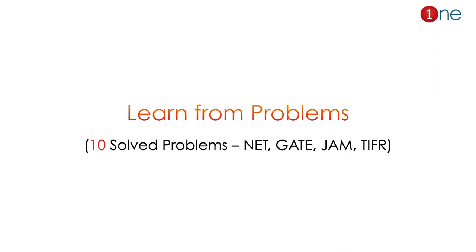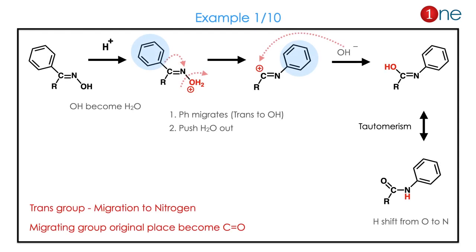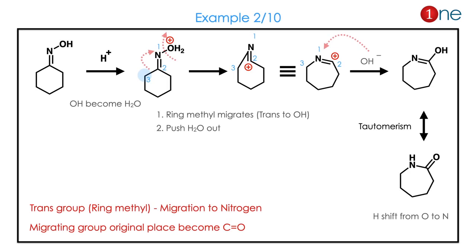We will learn Beckmann rearrangement more thoroughly through examples. Here are 10 solved problems from various examinations — NET, GATE, JAM, and TAFR. In the first problem, you have a phenyl-substituted oxime where phenyl and OH groups are trans to each other. Once you add H+, water tries to leave and the trans group migrates with O attachment. Finally you have the trans mode product: the phenyl-migrated amide. Applying the trick directly — migrate the group, write C=O, and add hydrogen to nitrogen.